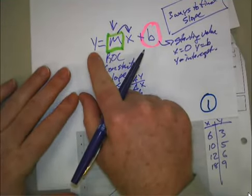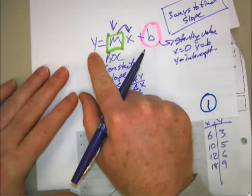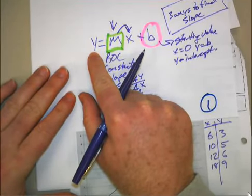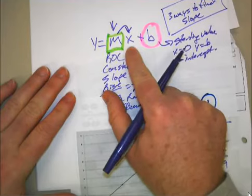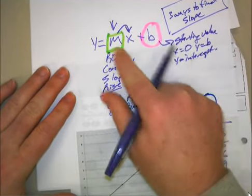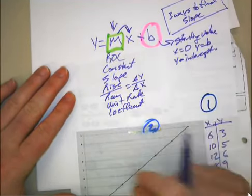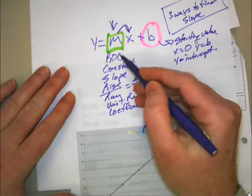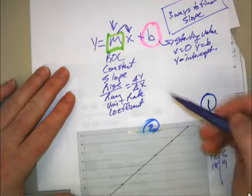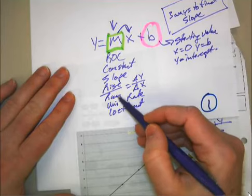All linear relationships will have equations written out in this form: Y equals MX plus B. M is your multiplier times the X value. It is your rate of change, your constant, your slope, your rise over run.